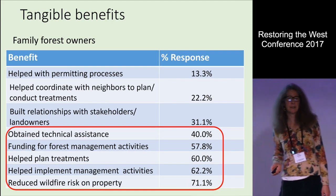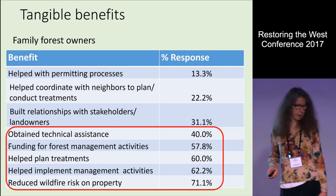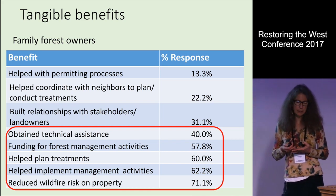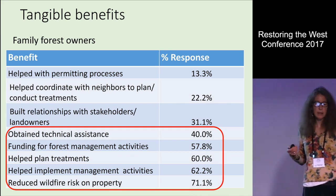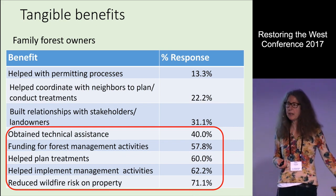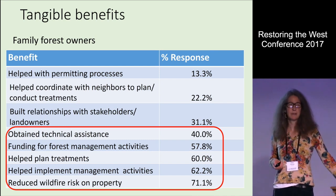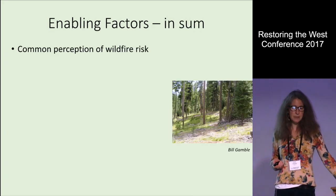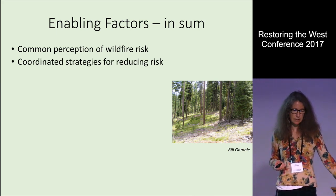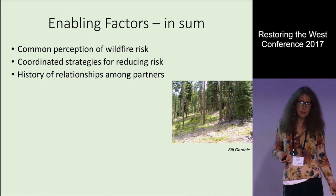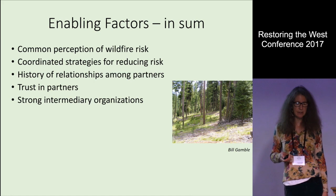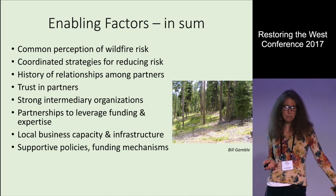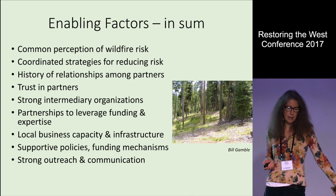There also have to be tangible benefits. People obtained technical assistance, funding to do the work they wanted to do, and help planning and implementing their treatments. The vast majority felt they were effective in reducing wildland fire risk on their property. So to summarize the enabling factors: common perceptions of wildfire risk, coordinated strategies for reducing risk, a history of relationships among partners, trust in your partners, strong intermediary organizations, partnerships to leverage funding and expertise, local business capacity, supportive policies and funding mechanisms, strong outreach and communication, and tangible benefits.